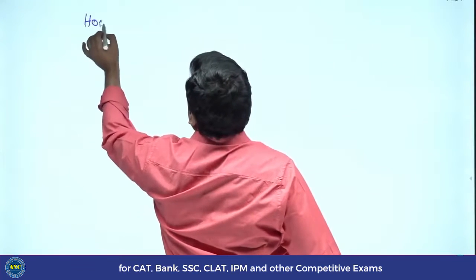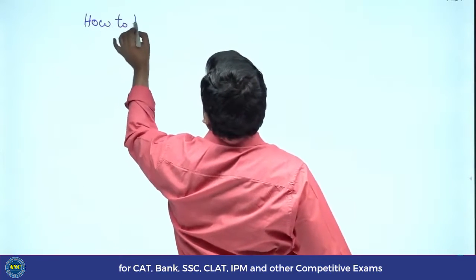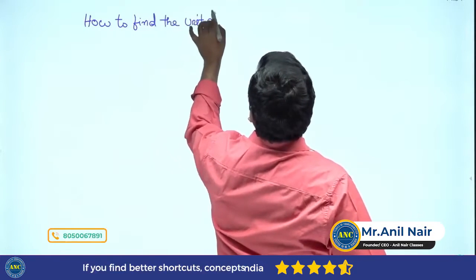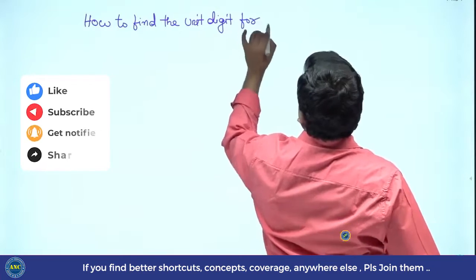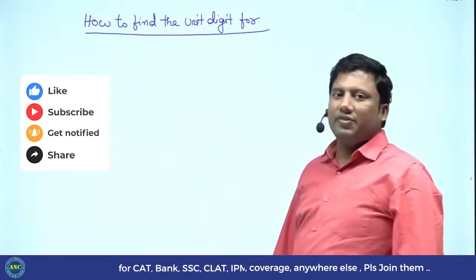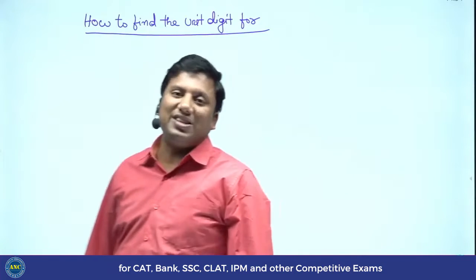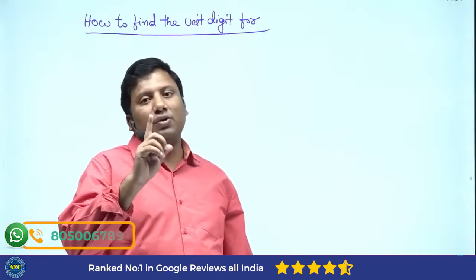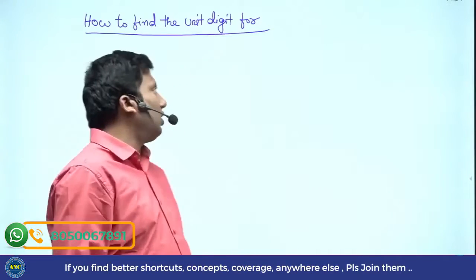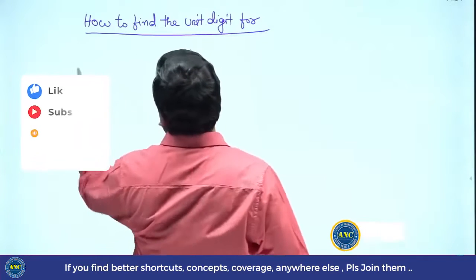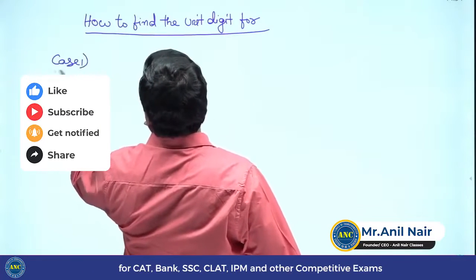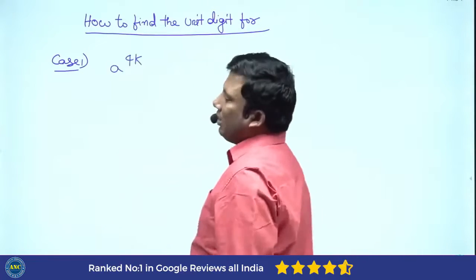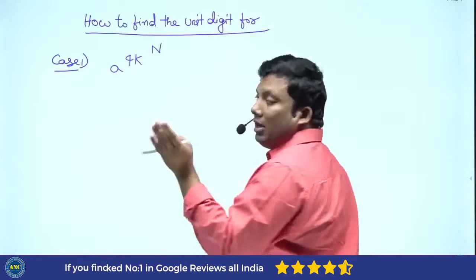How to find the unit digit. Now what is the concept that we discussed to find the unit digit of a number? Generic cyclicity to find the unit digit of a number — it is 4. That means we have 4 cases: 1st case, when the power is perfectly divisible by 4.